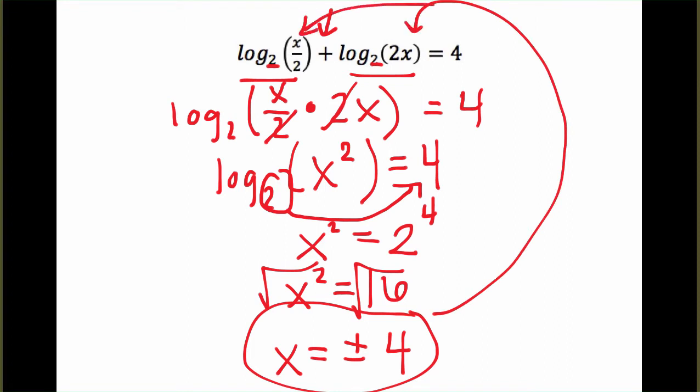if we plug in a positive 4, that just gives us the log base 2 of 8. But if we plug in a negative 4, it gives us a log base 2 of negative 8. And remember, this part inside of the logarithm can never be negative. So our only solution here is a positive 4, not the negative 4.